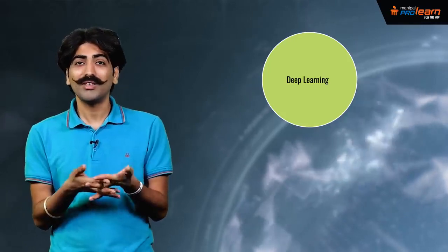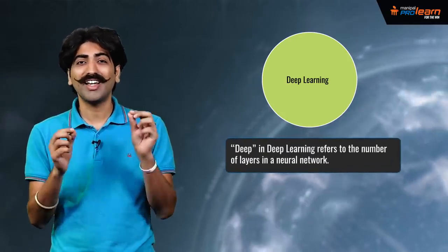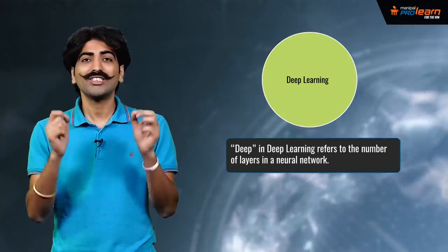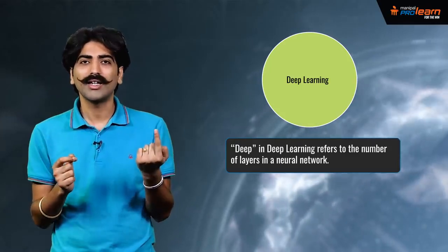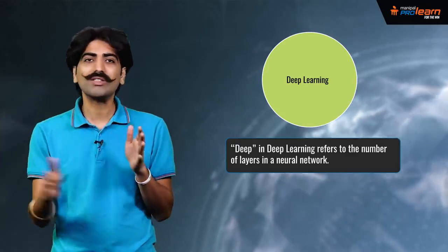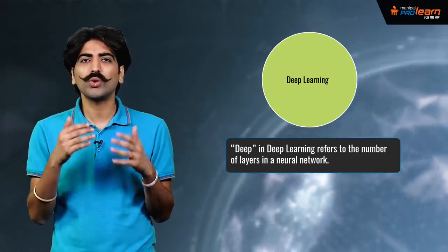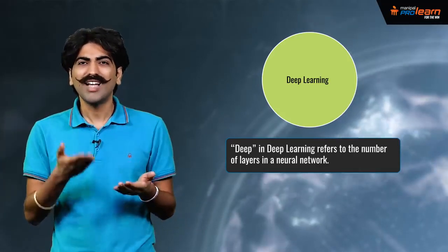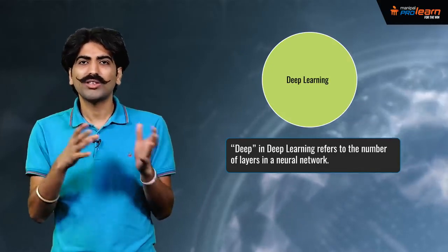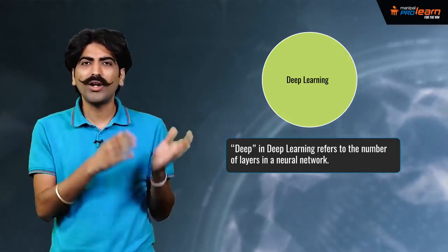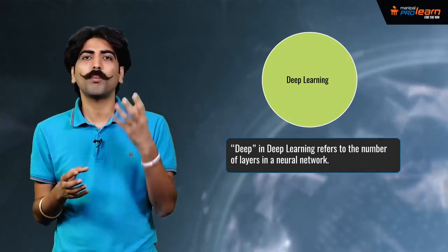The term deep in the deep learning refers to the number of layers in a neural network. A shallow network has one hidden layer, and a deep network have multiple such hidden layers. Multiple hidden layers allow deep neural networks to learn the features of the data in a hierarchical manner because simple features recombine from one layer to the next to form more complex features.